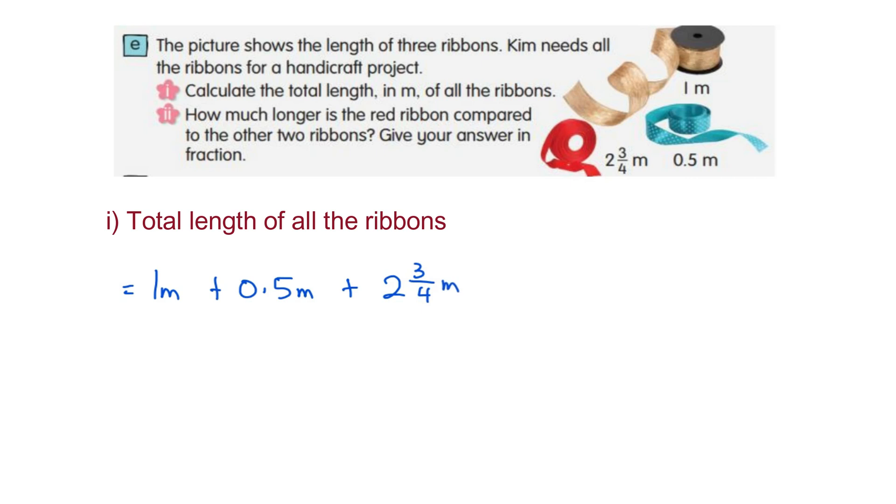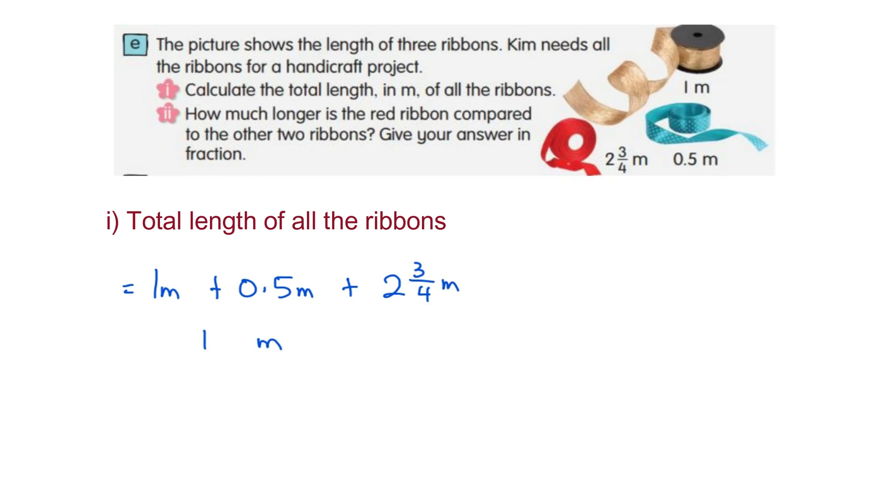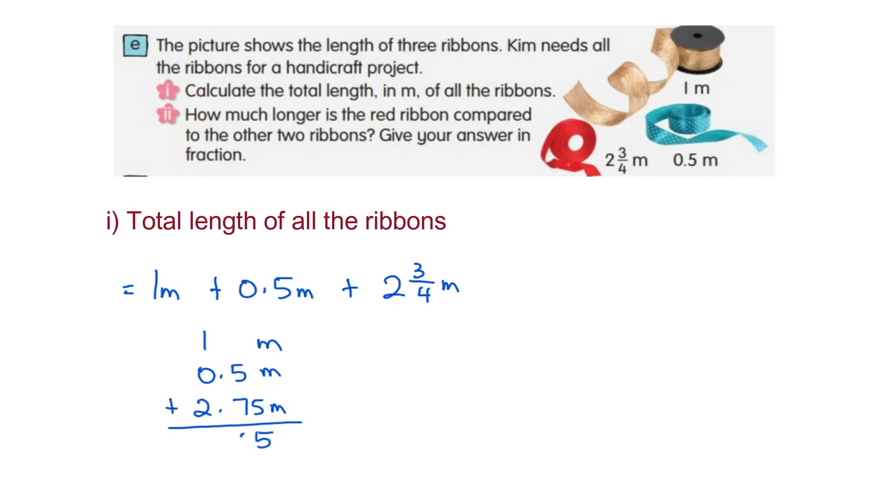As you can see, we have whole number, decimal, and fraction. So convert the fraction to decimal. We have 1 meter plus 0.5 meters plus 2.75 meters. So the total length is 4.25 meters.